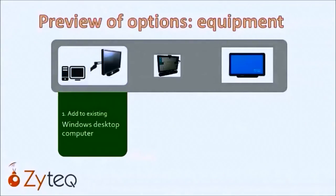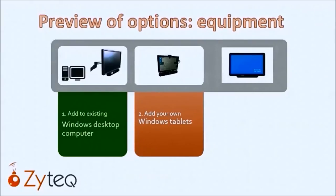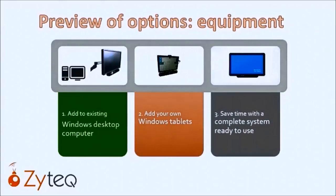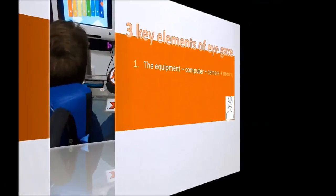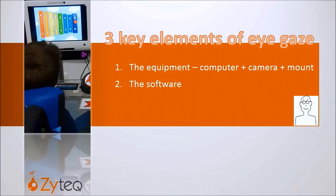The first concept is adding the eye gaze technology to an existing Windows desktop computer. The second is adding the eye gaze technology to your own Windows tablets. We call both of these concepts DIY, as you are putting all the components together to make a system. The third option is one of our complete systems designed for purpose, supplied ready for use. There are three key elements of any eye gaze system: the equipment consisting of the computer, the camera and the mount; second is the software; and the third element is the positioning of the student.